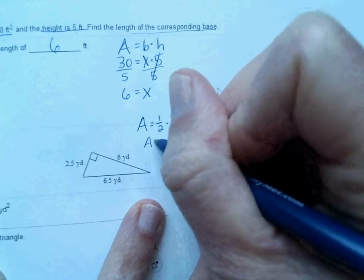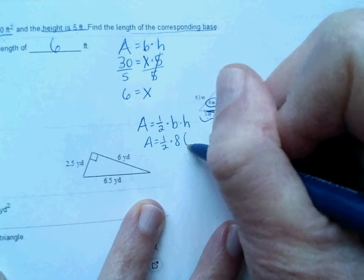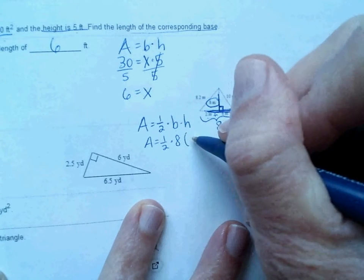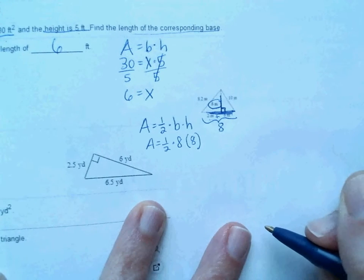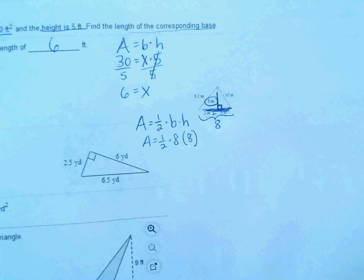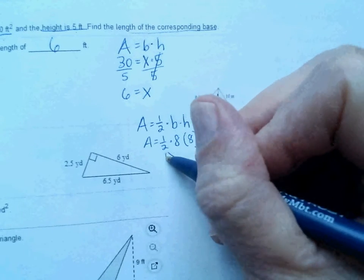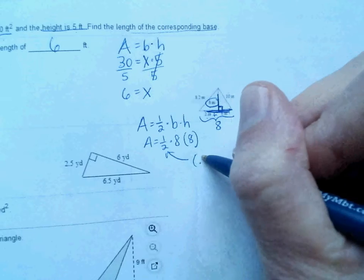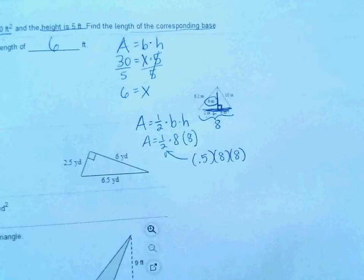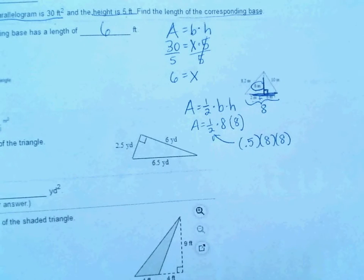So in this case, I would do 1 half times the 8 for the base, times the height. I can't read that, but I think it says 8 as well. And then you would multiply, 1 half times 8 times 8. If your calculator you're using at home doesn't have 1 half, you can always replace that with a 0.5 and then times 8 times 8. Or there's always the Desmos app. Feel free to use that as well.